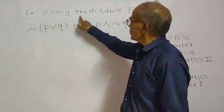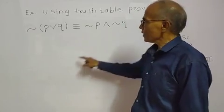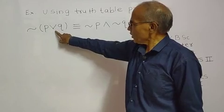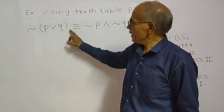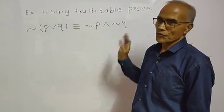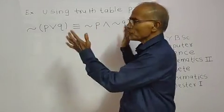Using truth table prove negation of P or Q is equivalent to negation of P and negation of Q. This is the truth table.